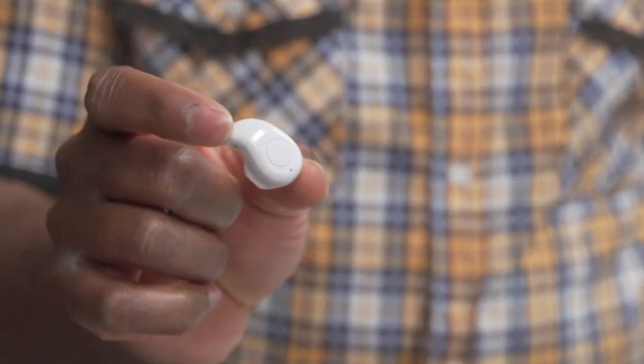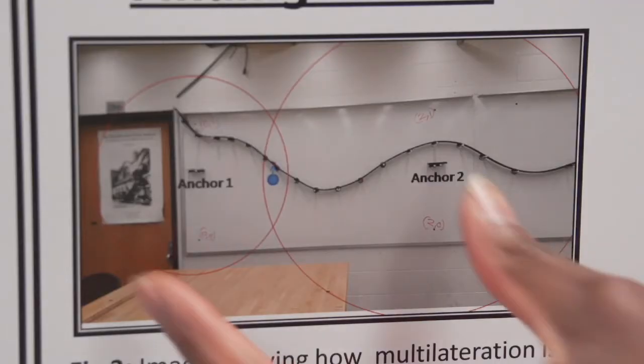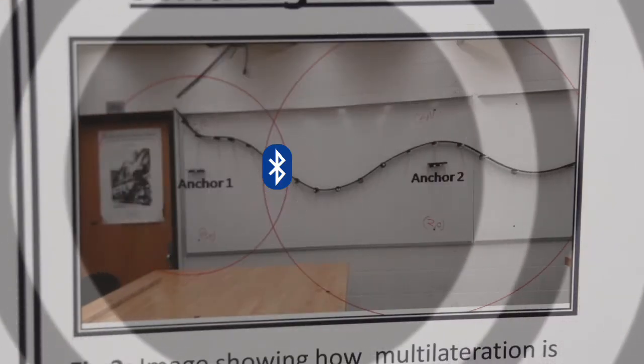What we used for the transmitter was Bluetooth headphones and these were actually cell phones. If it was a three-dimensional track, we would need at least four anchors.